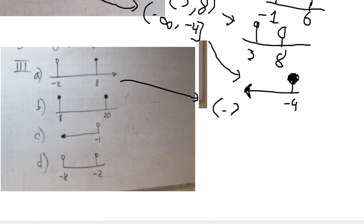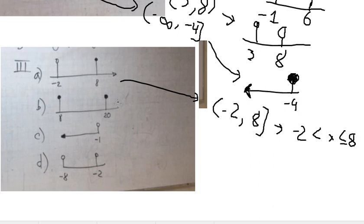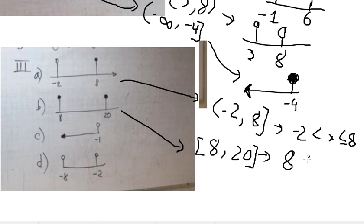This one involves negative two and a. The graph should look like this. This one is about eight and twenty with square brackets on both sides, so it should look like this.